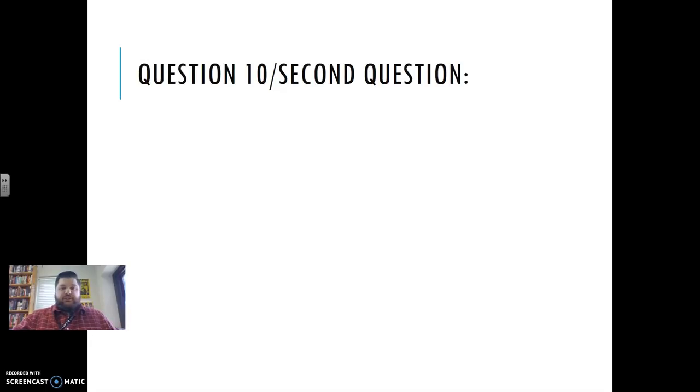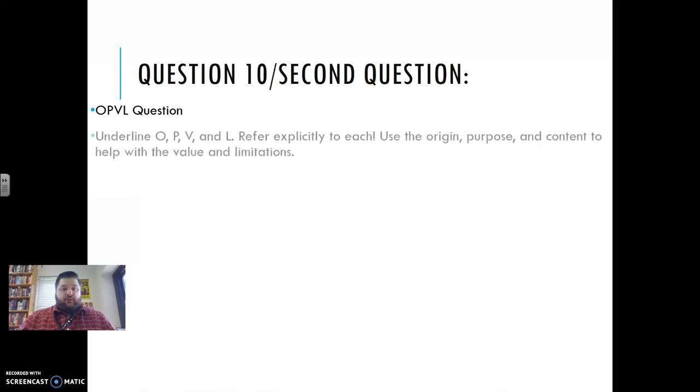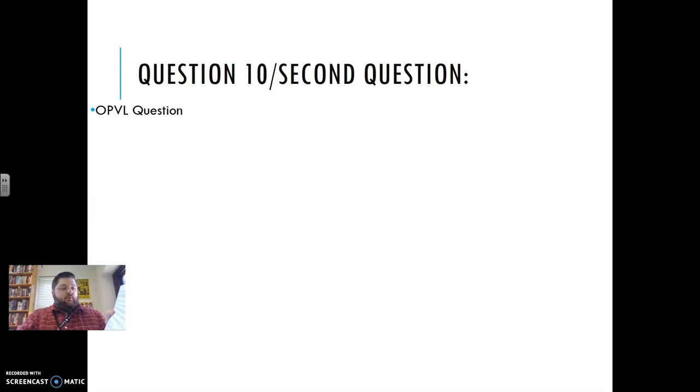The next question, which is question 10, if you're doing Move for Global War, just the second question in general, is always some sort of OPVL question. So with this one, we've got, with reference to its origin, purpose, and content, analyze the value and limitations of source K for a historian studying the tensions between the U.S. and Japan.